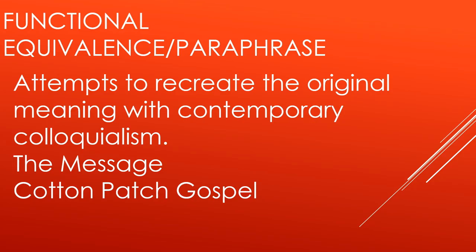For example, in the Cotton Patch Gospel, which takes the Gospel and moves the setting from Israel in the first century into the Deep South in the middle of the last century — instead of a Samaritan you have an African-American gentleman, and instead of a Jew you have a white gentleman. You've basically taken the meaning and translated it into something your readers can easily identify with. They're still trying to get at the original meaning, but they change the words, the imagery, the setting — everything is updated. The Message also follows this idea to some extent.